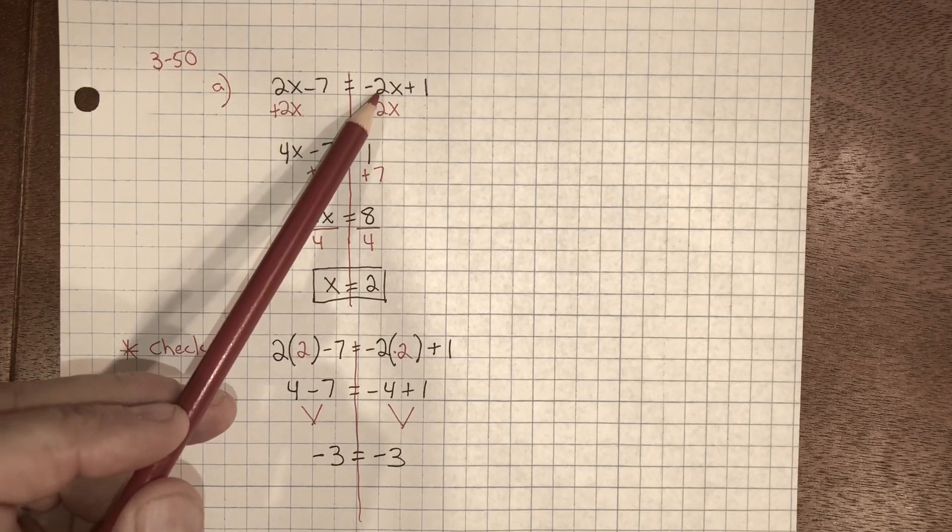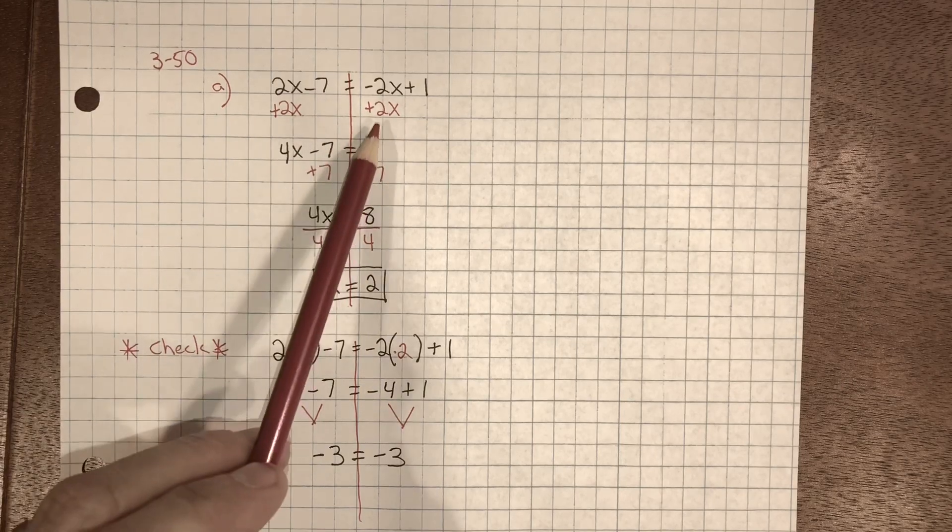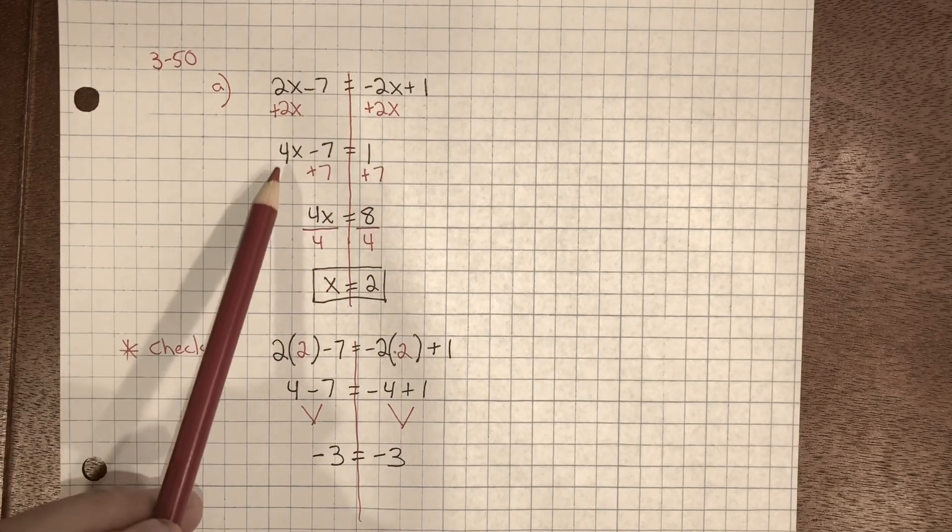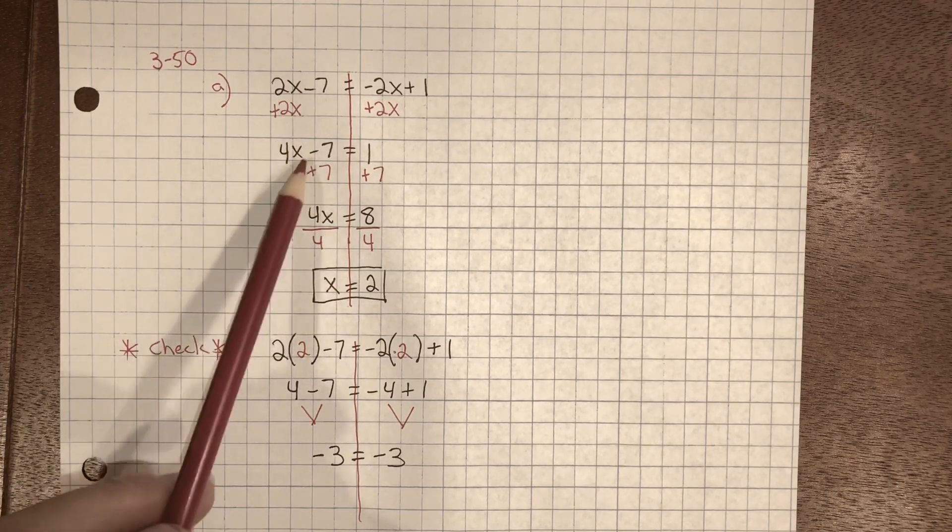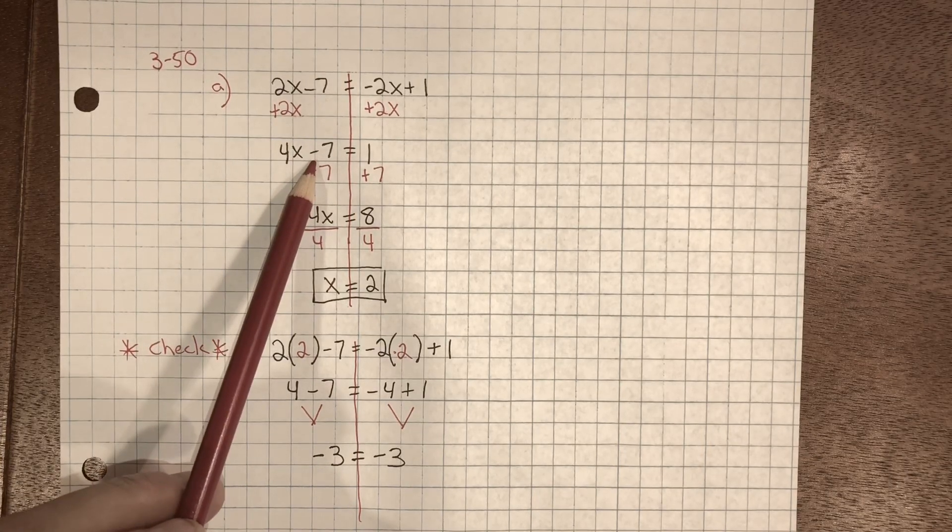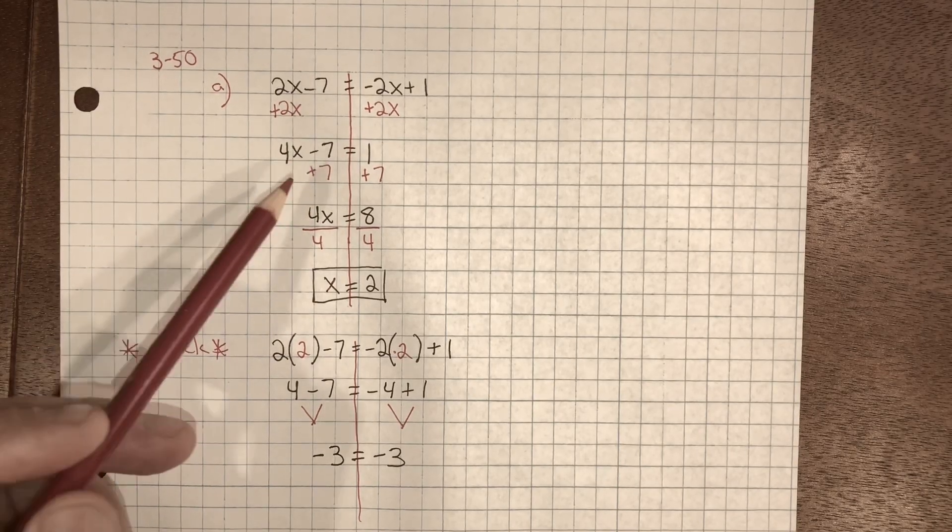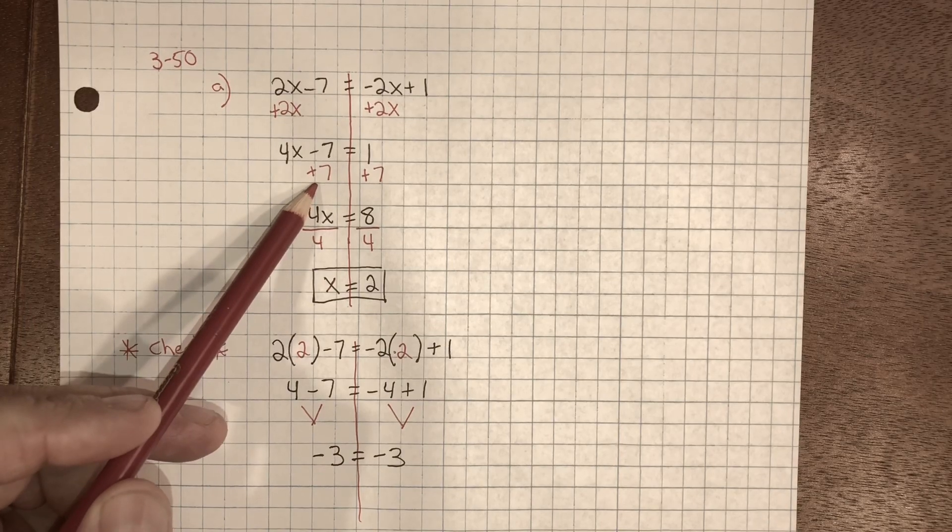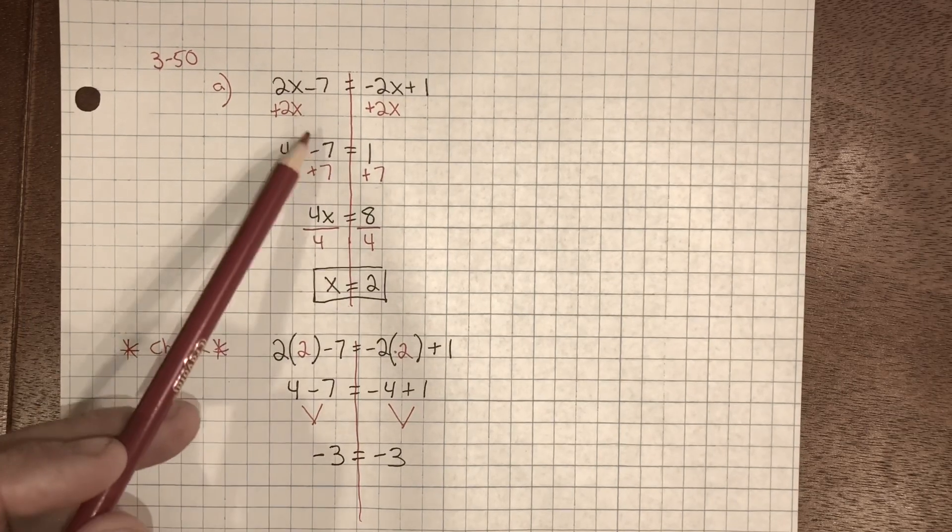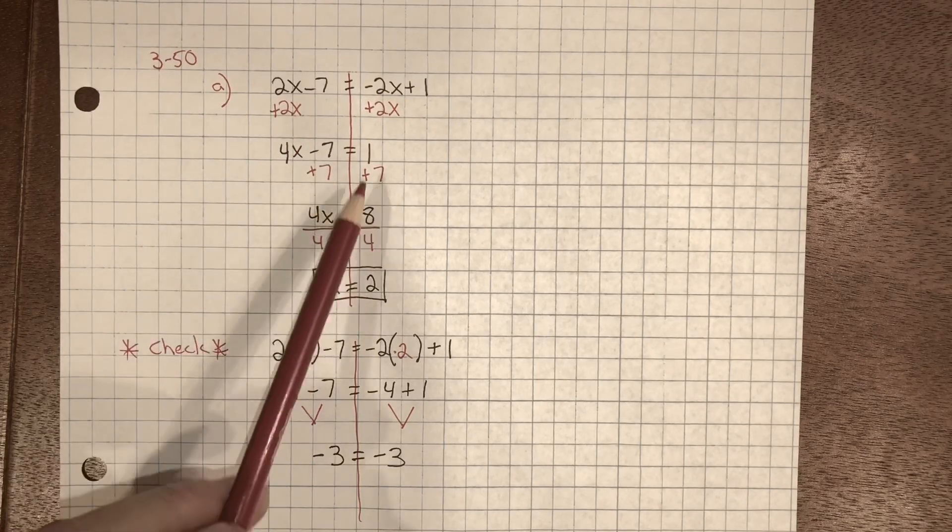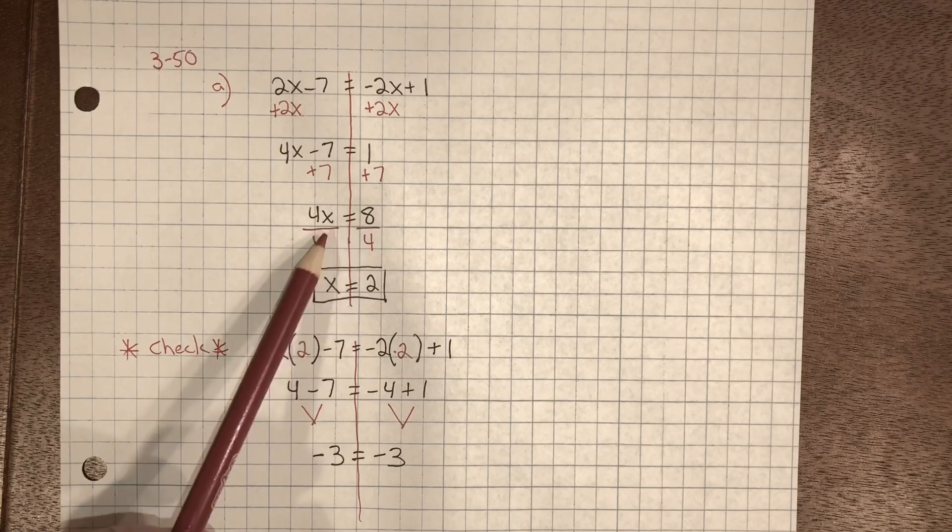The inverse property of subtraction is addition. So we add 2x plus 2x is 4x. Still don't have x by itself. We need to get rid of the negative 7. So we do the inverse property of subtraction, which is addition. And we add 7 to both sides. This created a zero pair. 1 plus 7 is 8.